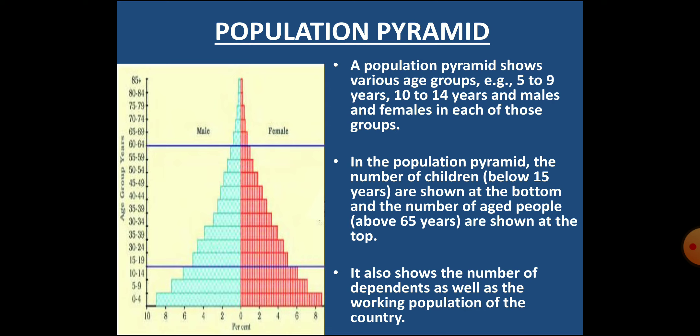The number of children below 15 years are shown at the bottom, and the number of aged people above 65 years are shown at the top. These two age groups — below 15 and above 65 — are considered dependents on the economically active working population, which falls between 15 and 64 years of age. This working population is shown between two blue lines.